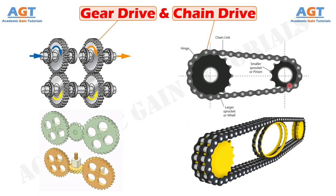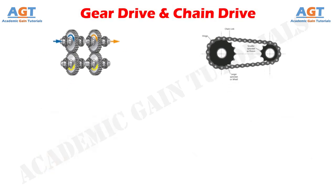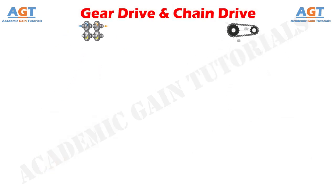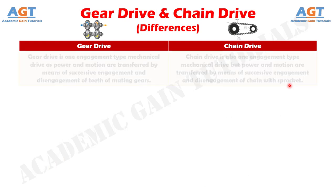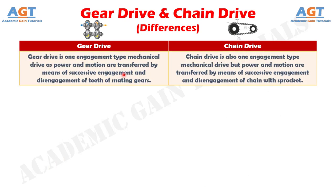So let's look into the basic differences between gear drive and chain drive in a tabular form. Difference number 1: Gear drive is an engagement type mechanical drive, as power and motion are transferred by means of successive engagement and disengagement of teeth of mating gears.